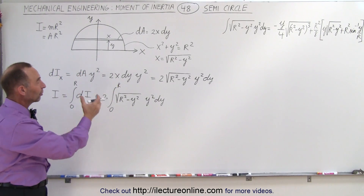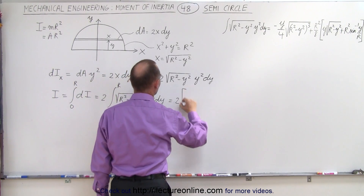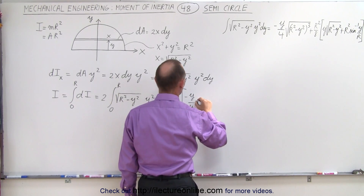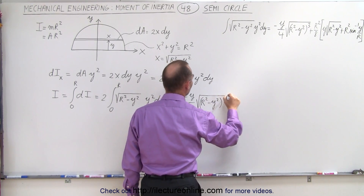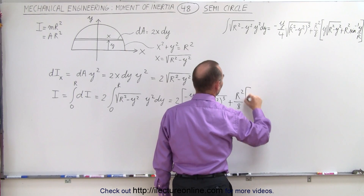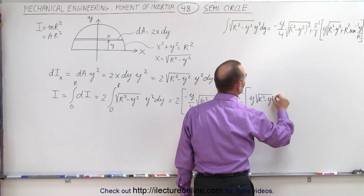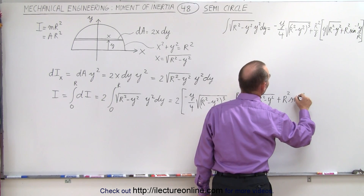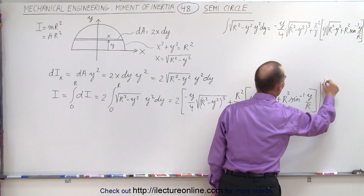Now we can simply apply the solution to the integral, because otherwise it would be a lot of work. This is equal to 2 times: negative y over 4 times the square root of r² minus y² to the third power, plus r² over 8 times y times the square root of r² minus y², plus r² times the inverse sine of y over r, the whole thing evaluated from 0 to r.